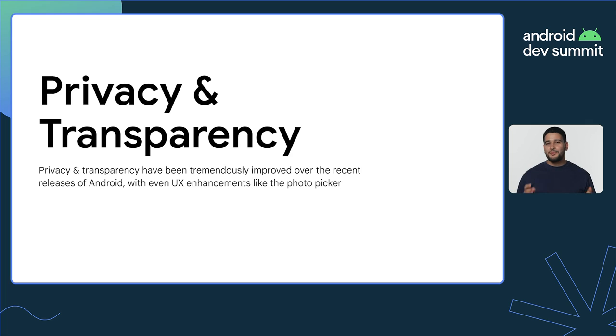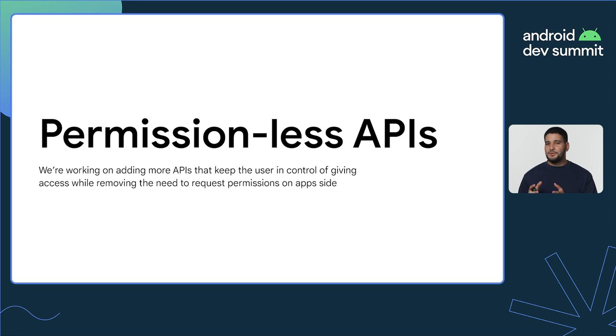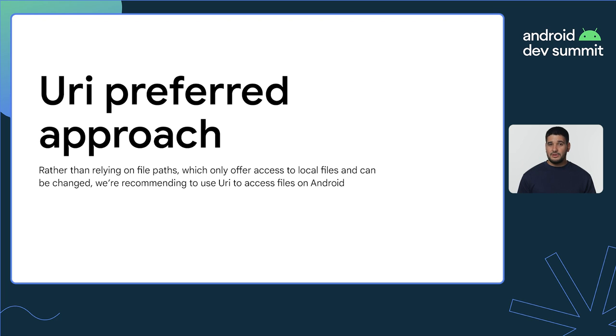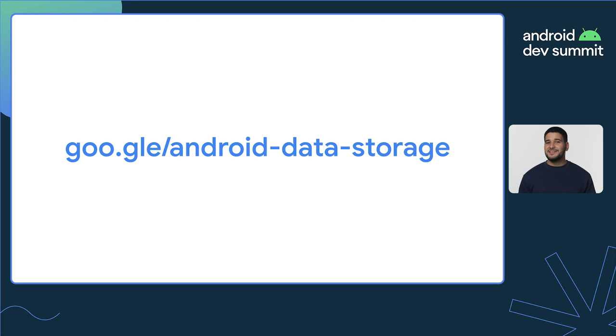Your app may have a use case requiring broad access, like gallery photo backup. For these specific usages, we've introduced new permissions in Android 13 when targeting API 33 that provide access to specific types of media files, including images, video, or audio. You can read more about them in the documentation. Privacy and transparency have been tremendously improved over the recent releases of Android, with UX enhancements like the Photo Picker. We're working on adding more APIs that keep the user in control of giving access, while removing the need to request permissions on the app side. As a recommendation, rather than relying on file paths — which only offer access to local files and can change over different versions of Android — we recommend using URIs to access files on Android. Have a look at our documentation for more details on the features presented today. Thank you.